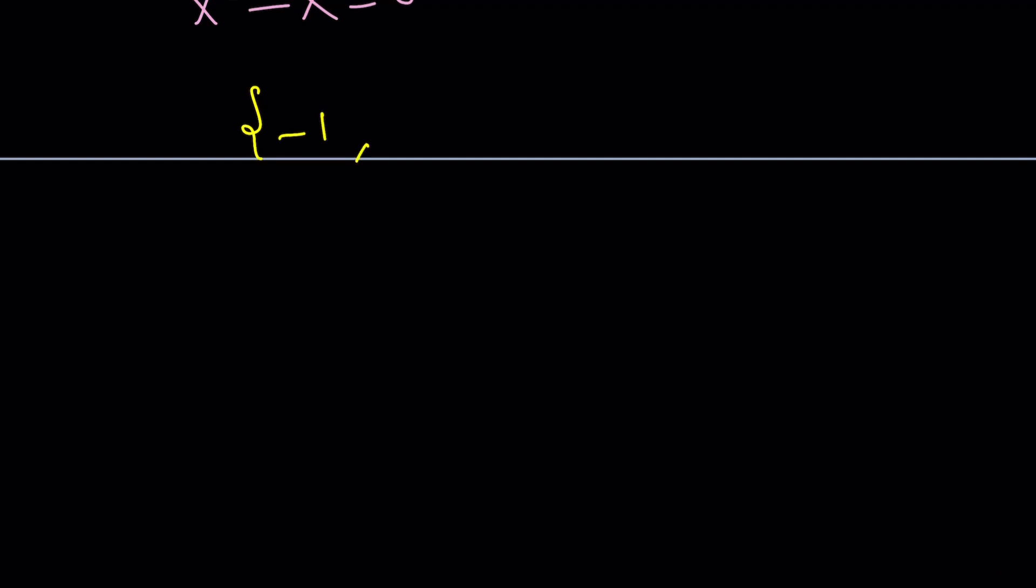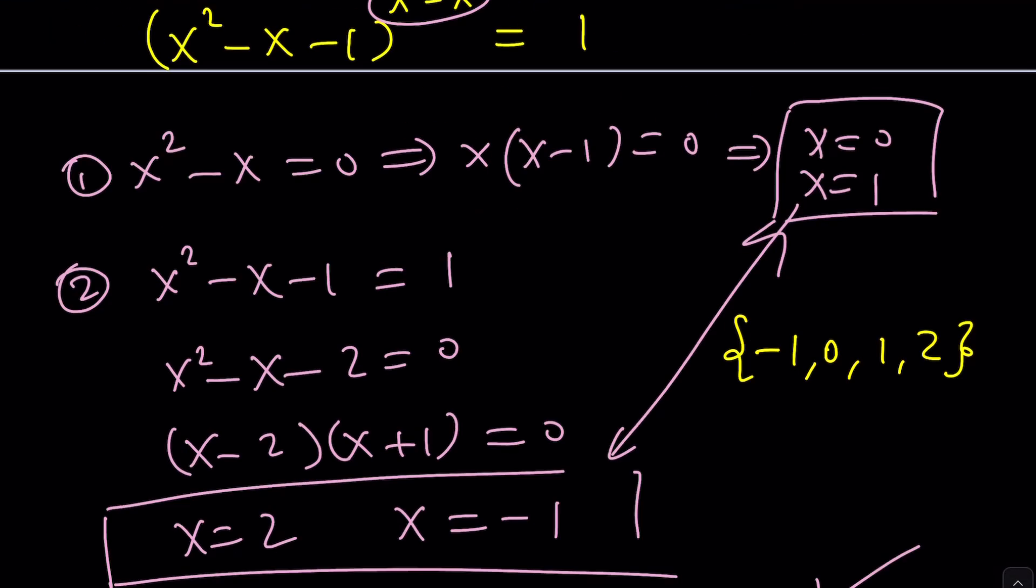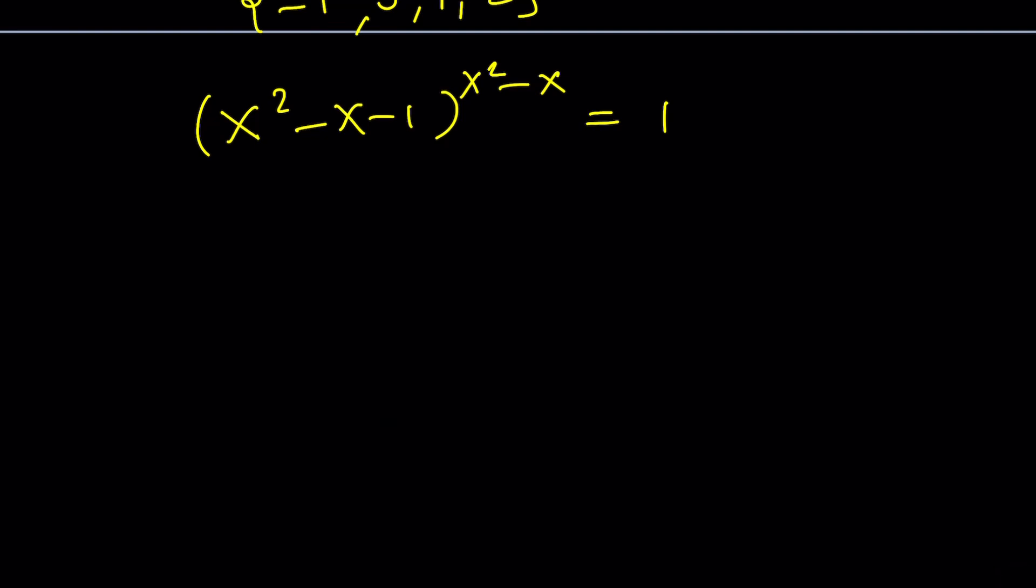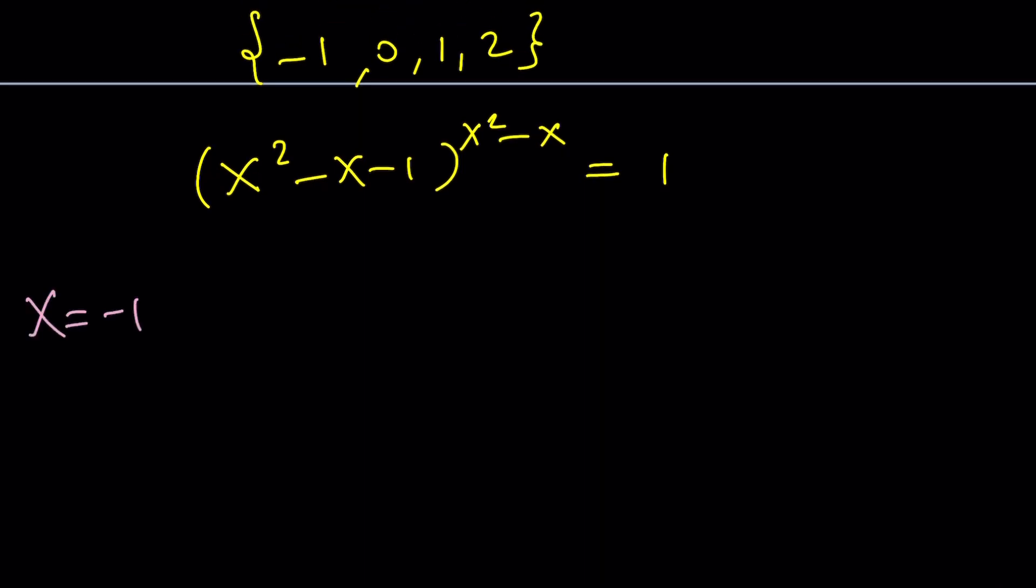Negative 1, 0, 1, and 2. And our original equation is x squared minus x minus 1 to the power x squared minus x equals 1, right? Now let's check our work. If x is negative 1, plug it in. 1 minus 1 minus 1 to the power 1 minus 1. It should be plus 2 because x is negative. So this one gives you one cancels out, 1 to the power 2, which is 1. All good.